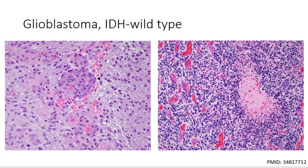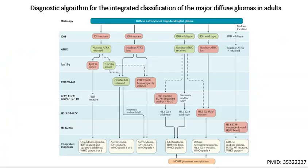Glioblastoma IDH wild type frequently exhibits microvascular proliferation and pseudopalisading necrosis, including the classic glomeruloid microvascular proliferation. Shown here is the diagnostic algorithm for integrating classifications of the major diffuse gliomas in adults. The classification integrates histological tumor typing and grading as well as analysis of molecular markers — there is a seven-layered integrated diagnosis as well as eight genomic and five protein signatures. IDH and ATRX are the gatekeepers of this classification scheme.